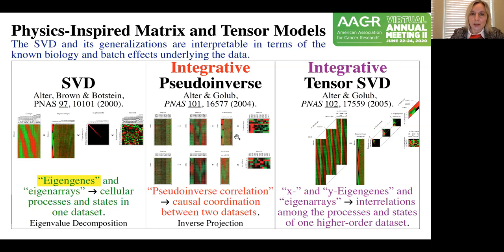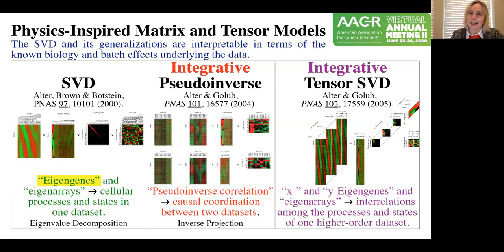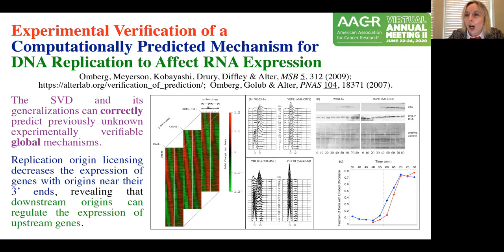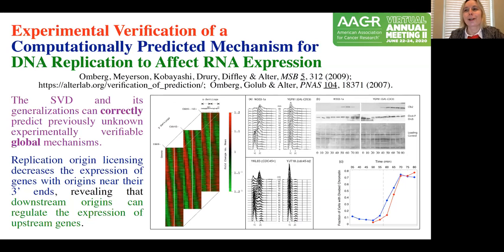We also showed that generalizations of the SVD are able to integrate different types of data together and find patterns that can suggest previously unknown processes underlying the data. We predicted a mechanism computationally in that way, tested it experimentally, and verified it — essentially demonstrating that the SVD and its generalizations can correctly predict previously unknown and experimentally verifiable mechanisms on the global scale, meaning the whole genome, the whole transcriptome, or the interaction of the whole proteome with the genome and transcriptome.